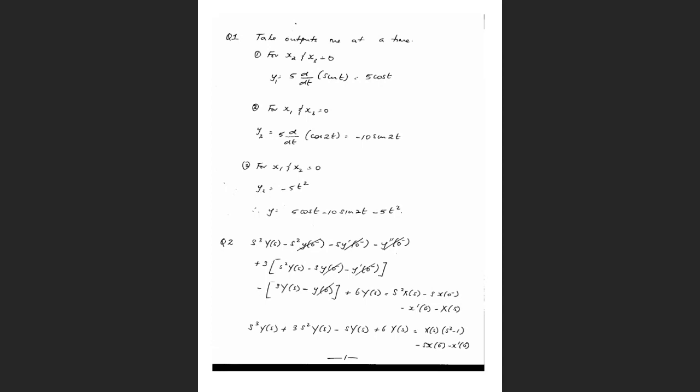The midterm last time wasn't bad and this one should be even more straightforward, assuming you've been doing the work. Everything is based on what we've done so far. Tomorrow morning's class will run from 10 to 11 — a one-hour class in electronics — finishing at 11 so you can prepare before coming back at one for the midterm.